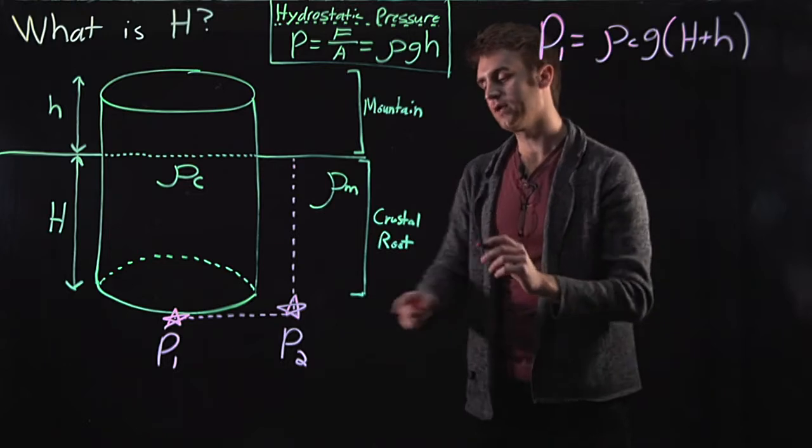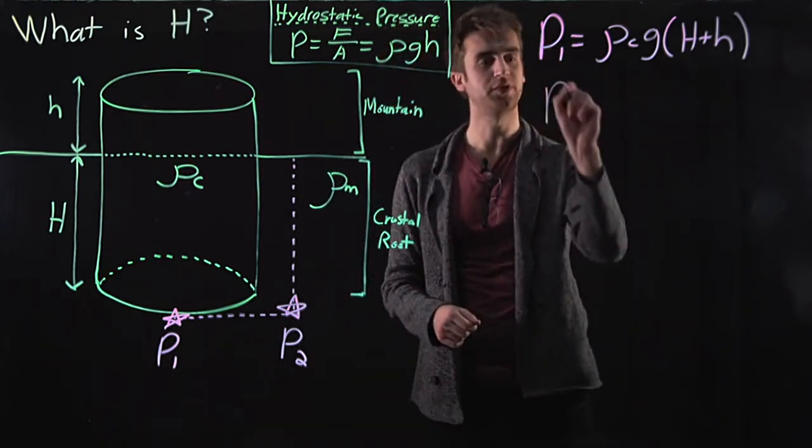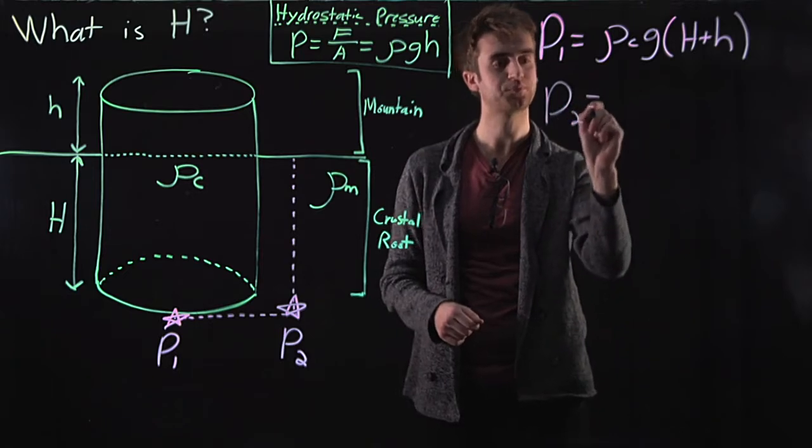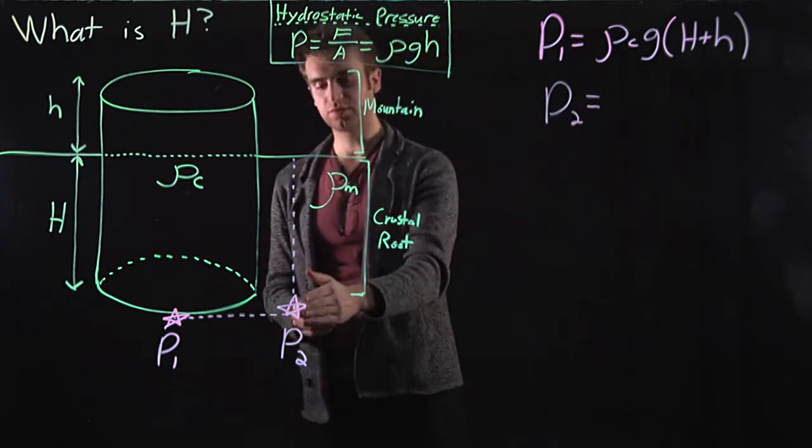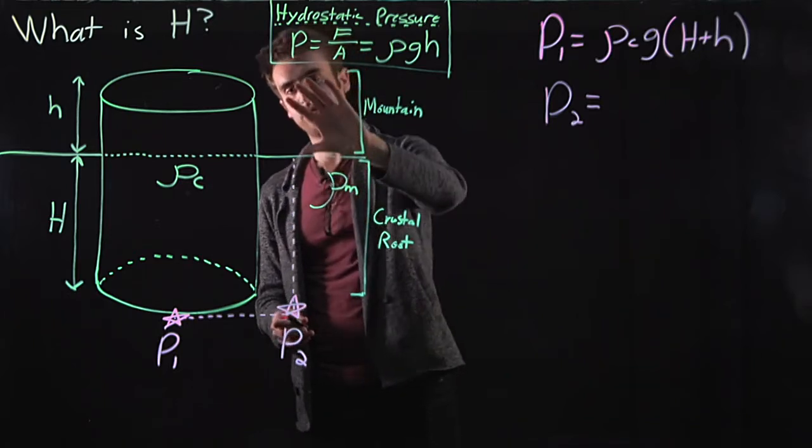So let's go ahead and describe p2 now using hydrostatic equilibrium. So p2 equals, well, all of the overlying material is mantle rock. And this is just air up here. There's no mountain on top.